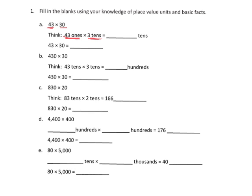And so when we multiply, we're going to do 43 times 3. So over here, 43 times 3, we get 129. So that's going to be 129 tens, and 129 tens is equal to 1,290.